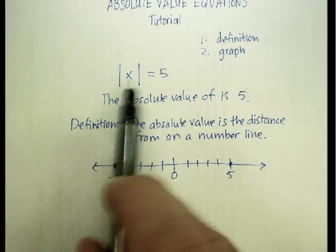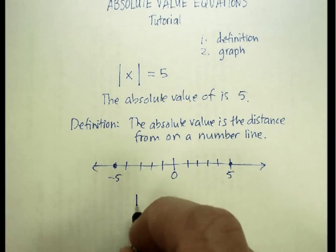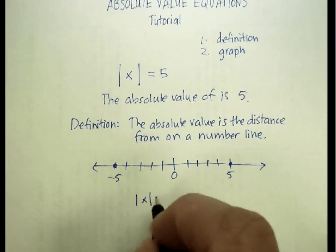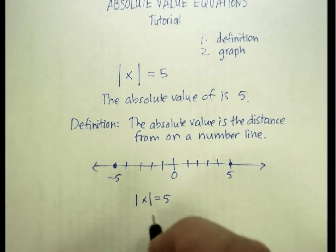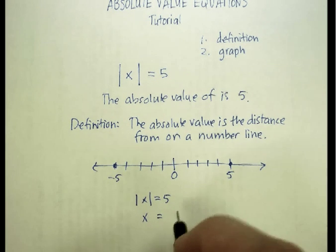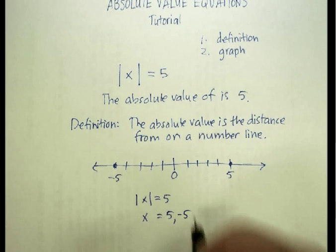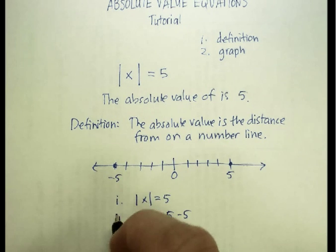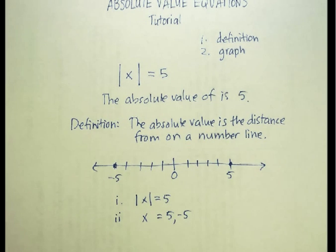So the way you write this, the absolute value of x is 5, is that x is equal to 5 and negative 5. And that would be my answer.